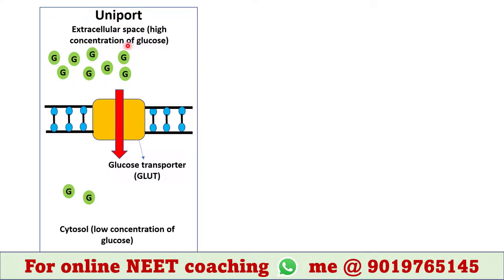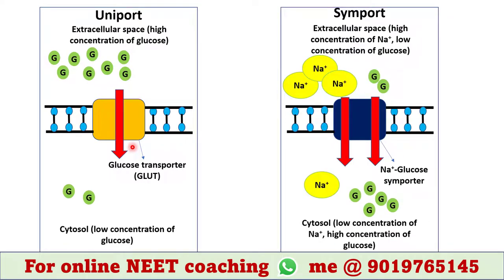Let's talk about uniport first. In this transport technique, a single type of substance — like glucose in this case — crosses the plasma membrane. The concentration of glucose is higher in the extracellular space, that is in the blood system, and lower in the cytosol of the liver cell. Hence glucose enters the cytosol from the extracellular space down the concentration gradient. It is a passive transport since it does not require any energy from ATP hydrolysis.